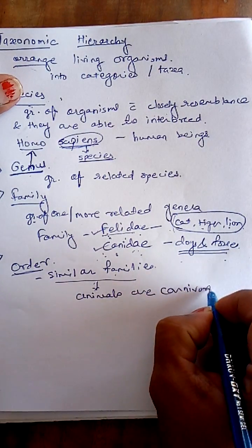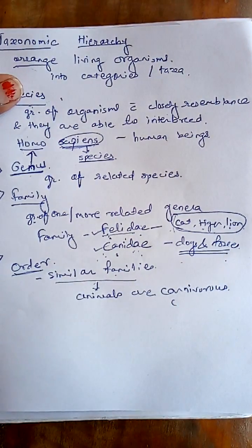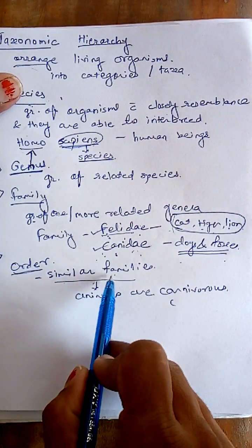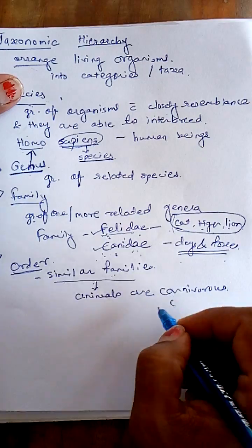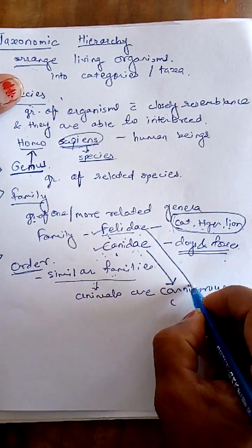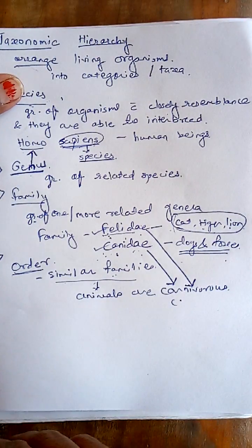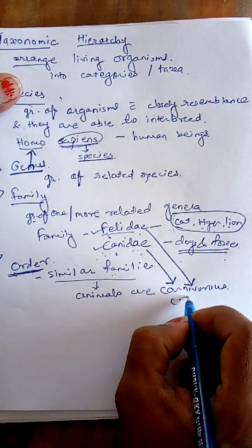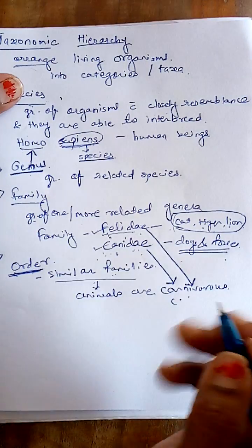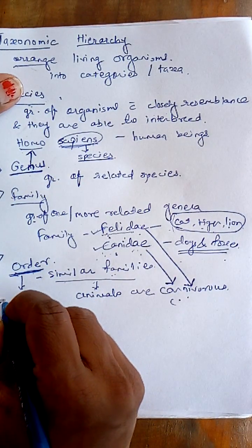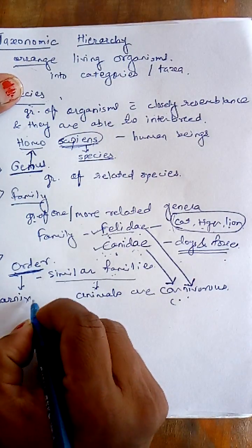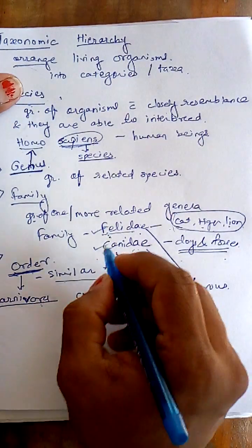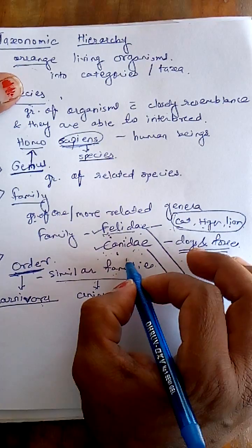Animals from Canidae and Felidae are carnivorous, and since we are placing them in a single order as they are carnivorous, that order is called Carnivora. Order Carnivora includes both family Felidae and family Canidae. So this is about the order.